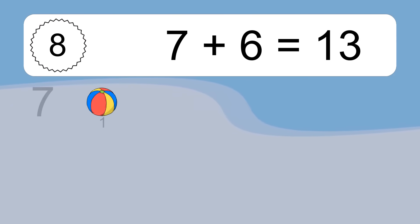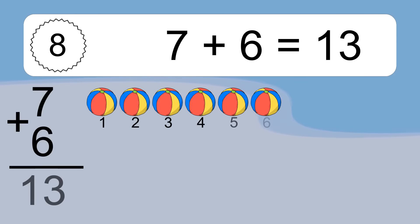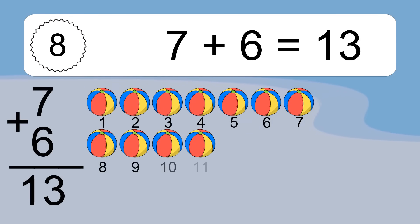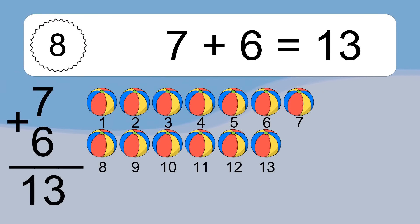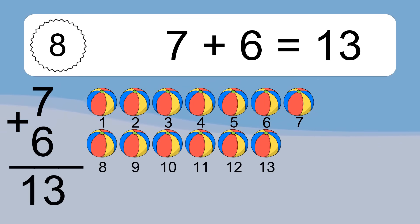7 plus 6 equals what? 7 plus 6 equals 13. Let's count it: 1, 2, 3, 4, 5, 6, 7, 8, 9, 10, 11, 12, 13.